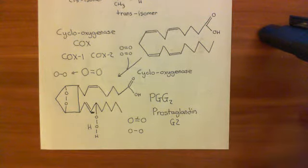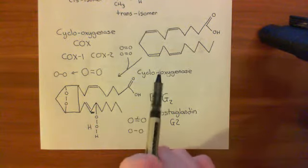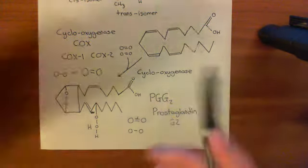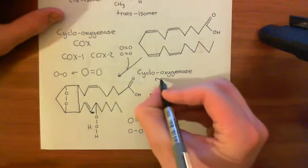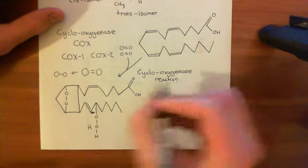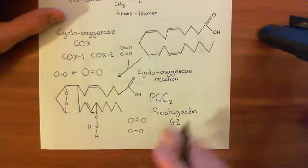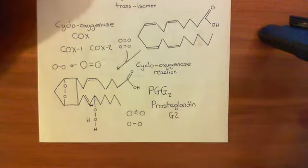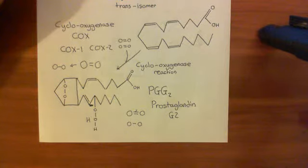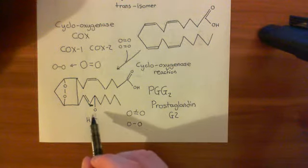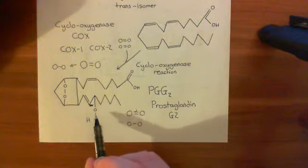I'm now telling you about prostanoids so we can understand what they actually are. We have the structure arachidonic acid, and cyclooxygenase enzymes catalyze firstly the cyclooxygenase reaction, where you produce an oxygen cycle and a peroxide link. The next reaction they catalyze is the so-called peroxidase reaction, where you hydrolyze — break — this peroxide bond.